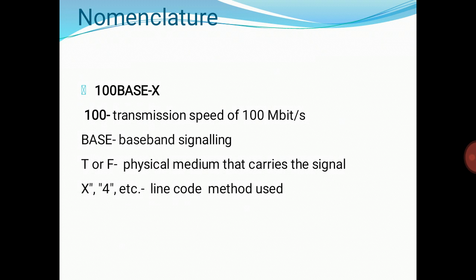The nomenclature of Fast Ethernet — for example, 100BaseX: 100 stands for transmission speed of 100 Mbps; Base defines the baseband signaling; T and F define the physical medium that carries the signal; X, 4, etc. define the line code method used.